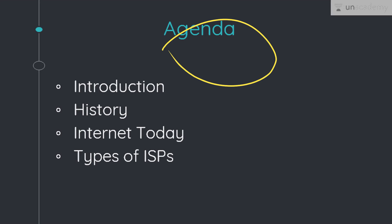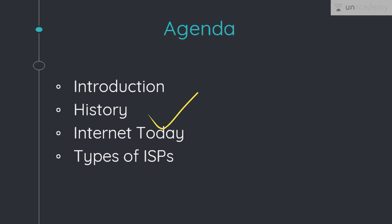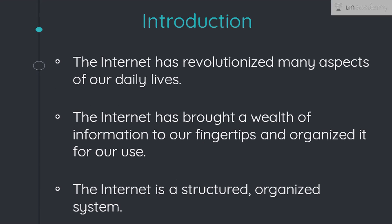So this is our agenda for today, right here on the screen. First, I will give you an introduction to the internet. We will look into the history of the internet and how it evolved. Then we will see what the internet is today. And last, we will learn about the different types of internet service providers or ISPs. The internet has revolutionized many aspects of our daily lives — it has affected the way we do business as well as the way we spend our leisure time. For example, sending email, paying a utility bill, reading a newspaper online, or looking up a local movie schedule on Book My Show.